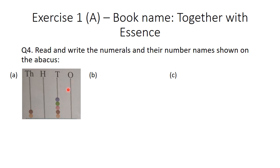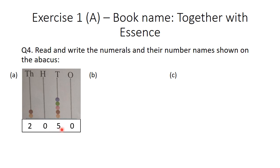Part A abacus: at the ones place, no beads are there, so we write 0. At the tens place, 5 beads are there, so we write 5. At the hundreds place, no beads are there, so we write 0. At the thousands place, 2 beads are there, so we write 2. The number formed is 2050, and its number name is two thousand and fifty.